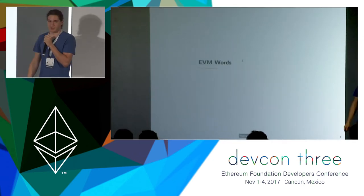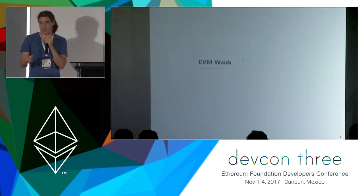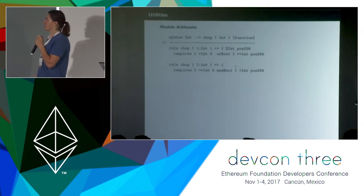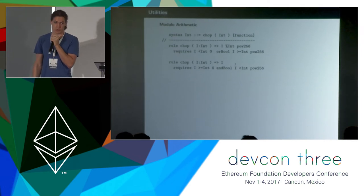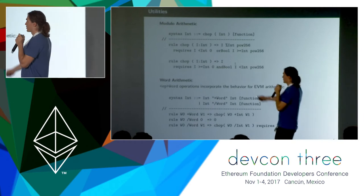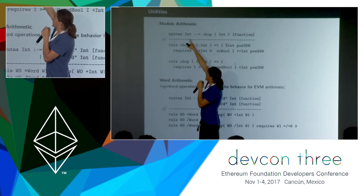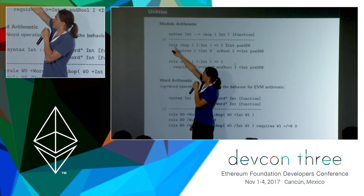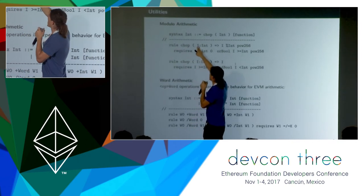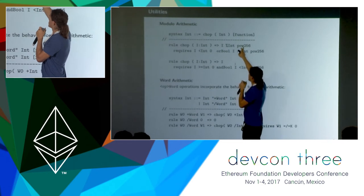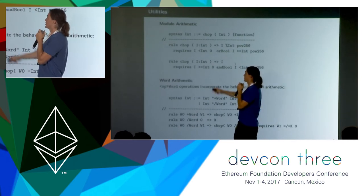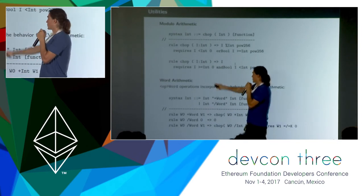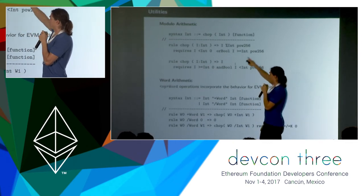I'm going to dive right in — this part of the presentation is just going to be a bunch of K. I'm going to try to teach you K using an example that hopefully people are familiar with, which is EVM. We'll start with some basic functional-style rules. Here we're declaring a function called chop — it takes in an integer and produces an integer, so the type signature is int to int. We declare it's a function and give the rule semantics: chop of some integer goes to the integer modulo pow256 — that's the built-in K modulus operator — and that only happens if it's less than zero or greater than pow256, which is 2^256. Otherwise it just goes to I if it's within those bounds.